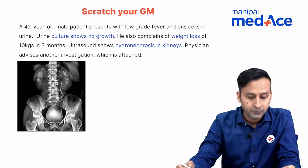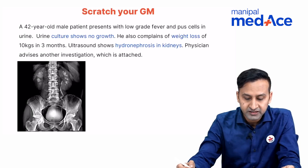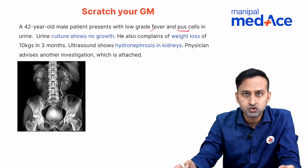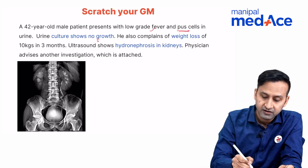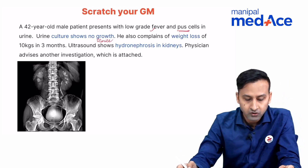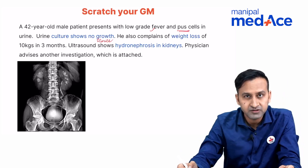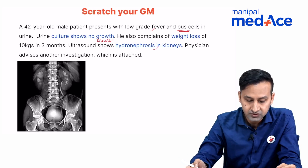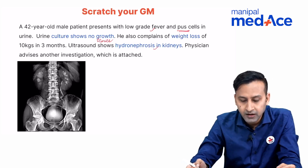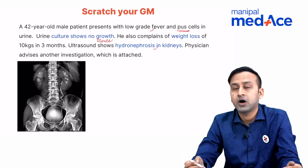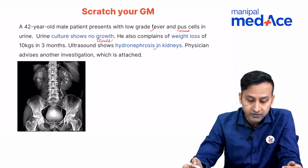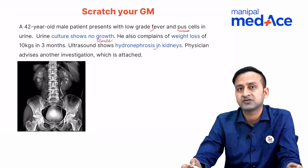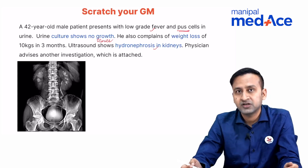Now let's look at another case scenario. There is a 42-year-old male patient presenting with low-grade fever and pus cells — that is, pyuria. Urine culture shows no growth, meaning urine culture is sterile. He is also complaining of weight loss of 10 kg in 3 months — quite alarming signs. Ultrasound shows hydronephrosis in the kidney. The examiner wants to know how we will proceed in this case, which is one of the commonest questions from the section of genitourinary infections.